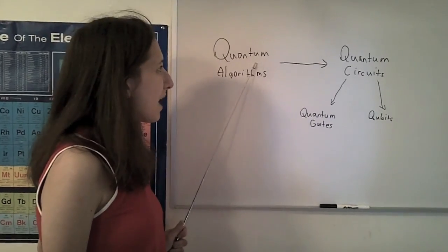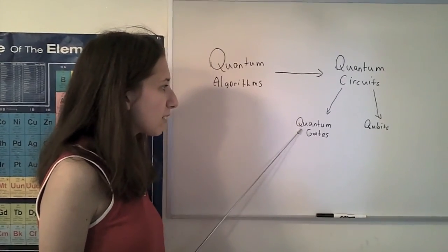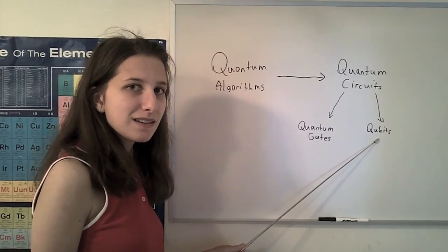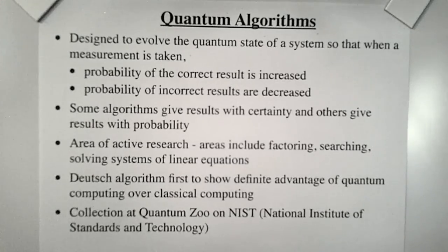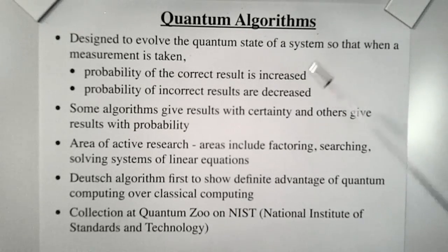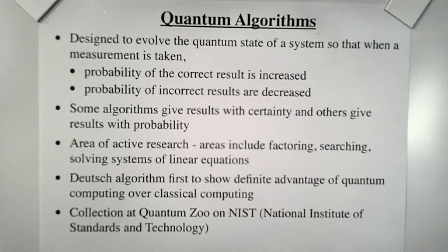Before we go into detail, let's give an overview of how all the pieces fit together. Quantum algorithms are implemented by quantum circuits, which are comprised of quantum gates, which act upon quantum bits, or qubits. Quantum algorithms are designed to evolve the quantum state of a system, so that when a measurement is taken, the probability of the correct result is increased and the probability of incorrect results is decreased. Some algorithms give results with certainty, and others give results with probabilities. Quantum algorithms are an area of active research.